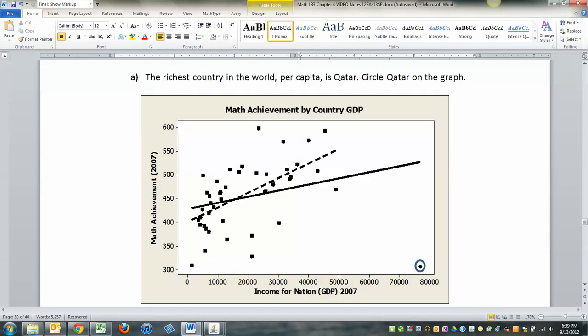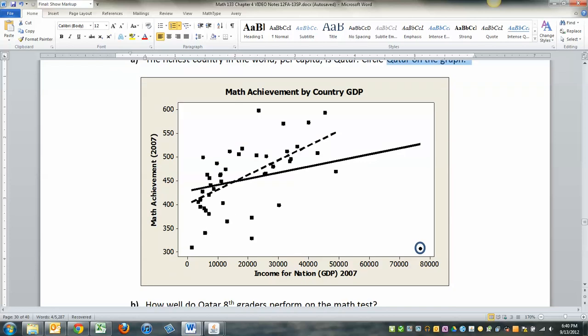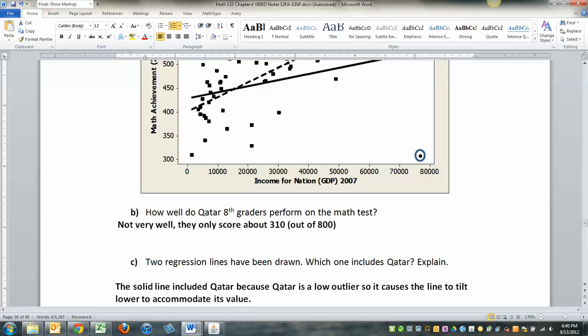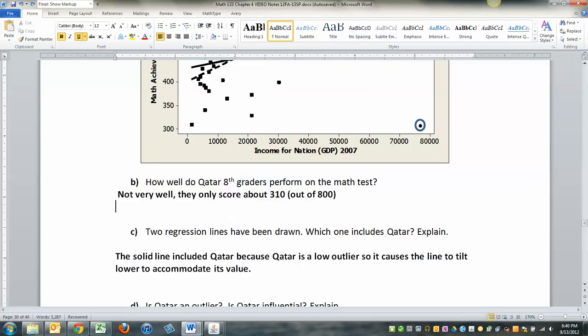All right. Let's look at math achievement and GDP. Remember, this was the first problem we looked at in chapter four. And out here we have the lovely country of Qatar circled on the graph as requested. All right. So we have Qatar. Qatar is definitely an outlier, right? You see visually how far away that country is from the rest of the group. Do eighth graders in Qatar perform well in this test? No, not very well at all, because they are far away from the rest of the group. They only scored about 310. And like the SATs, it's out of 800. So they're not performing very well. They're doing less than 50% on average.